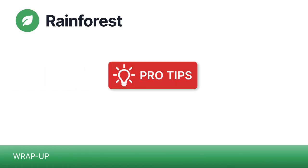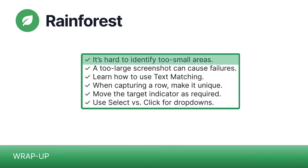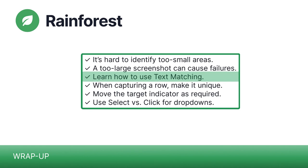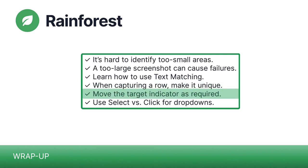When writing a visual editor test, keep in mind these pro tips. Ensure the area you're capturing isn't so small the element cannot be uniquely identified. Conversely, make sure the area isn't too large — if the element's position on the page changes in a future release, your test will likely fail. Learn how text matching can help you write better tests. If the page displays rows of results, make sure to capture enough of the row in question to make it unique. Move the target indicator as required. For dropdowns, use select versus click.